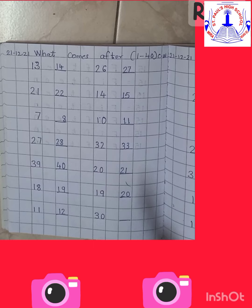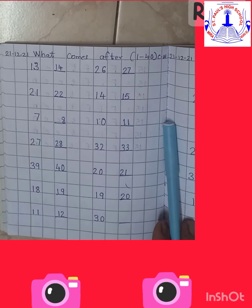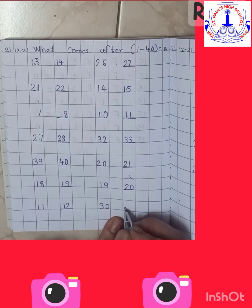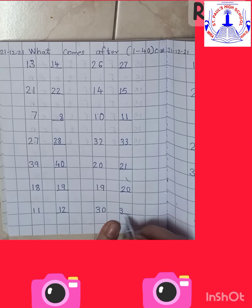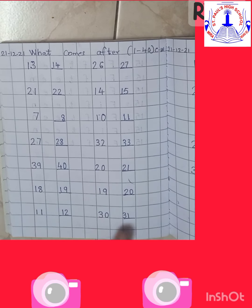Now what is the next number? 30. So let's start from number 21: 21, 22, 23, 24, 25, 26, 27, 28, 29, 30. What comes after 30? Yes, you are right — 31. So come on children, write your number 31.